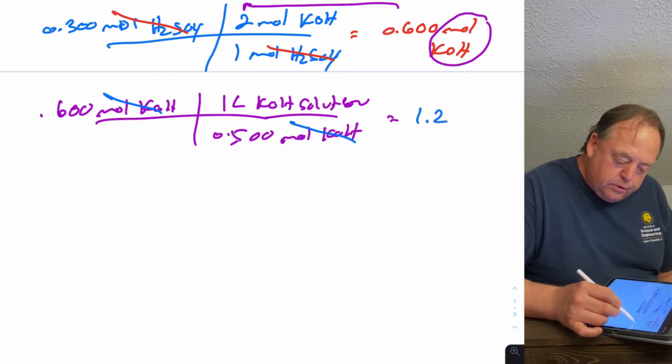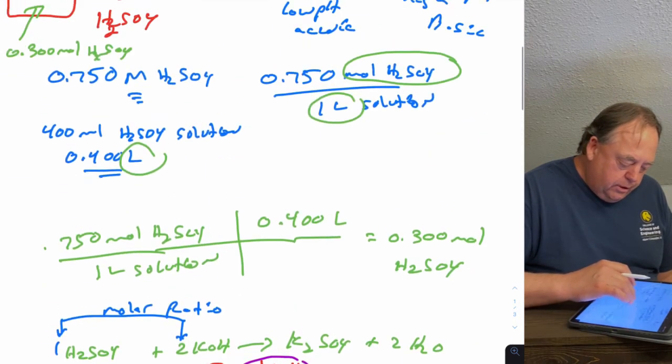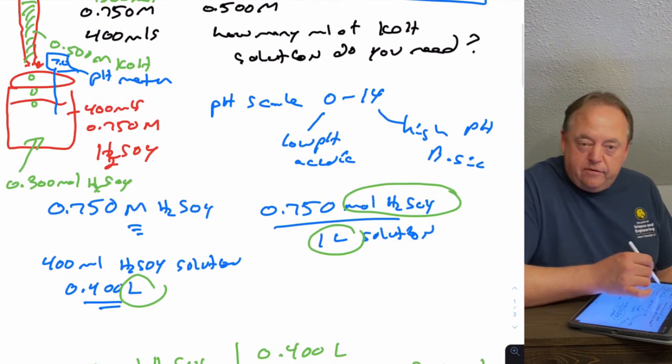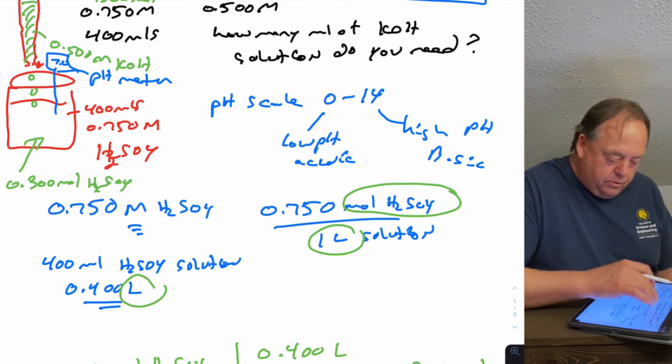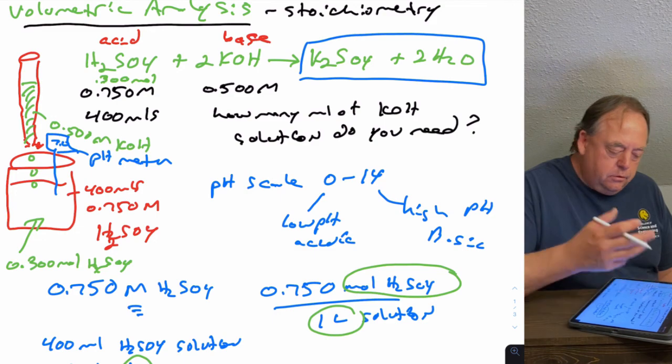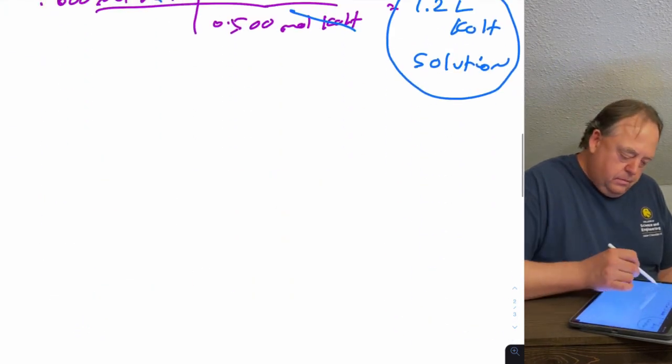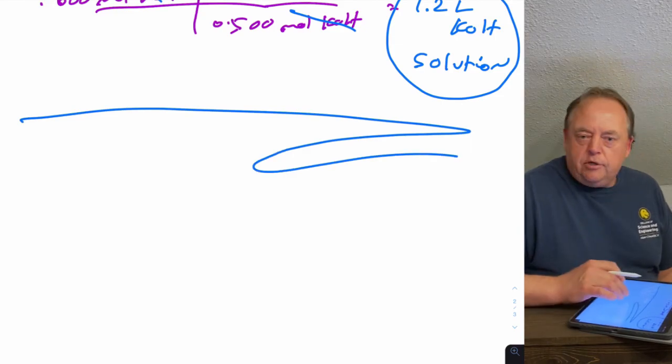You need to add 1.2 liters of KOH solution from the burette, and at that point that would react with all the H2SO4 in the solution and you would have a neutral solution at that point. That's how you do volumetric analysis.